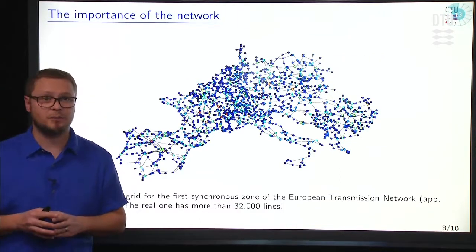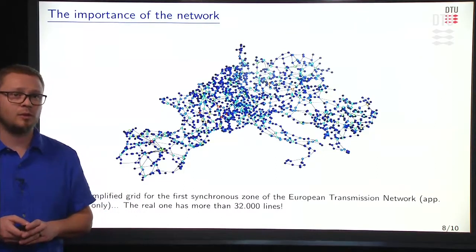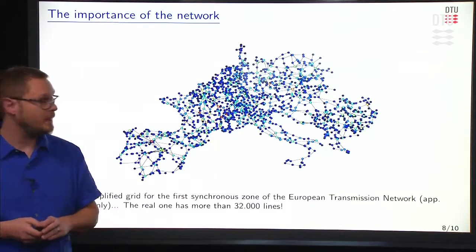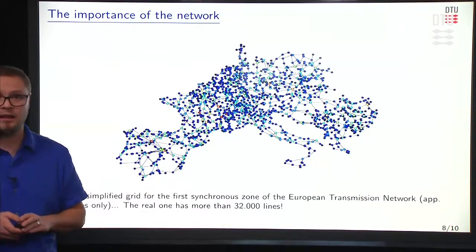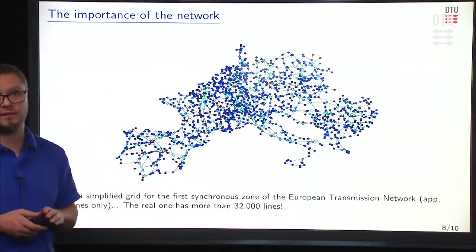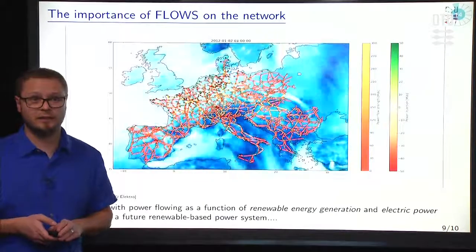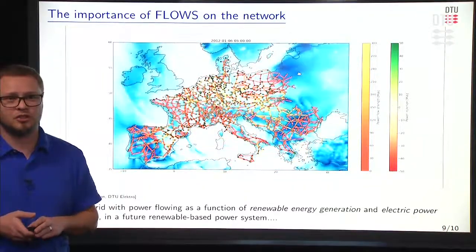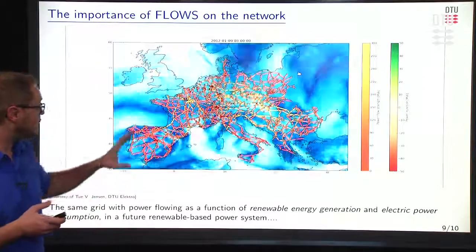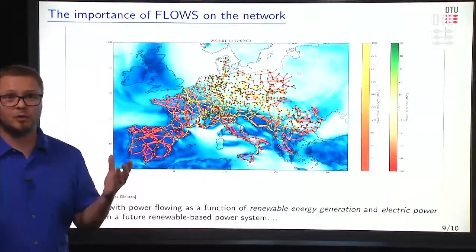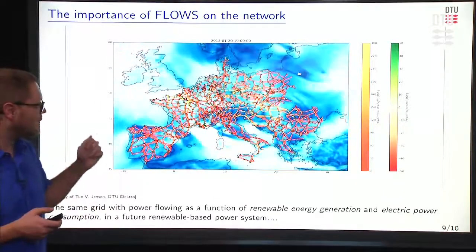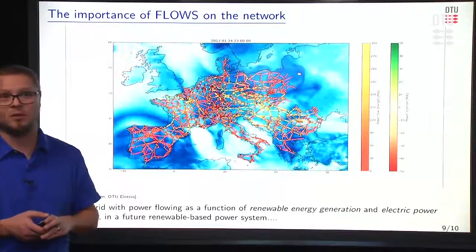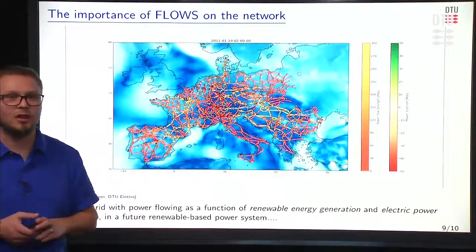When looking at this big project of a European-wide electricity market, we must remember that there is an underlying power network. This is a simplified representation of the European transmission network with 1,500 lines — but the real transmission-level power system has 30,000 lines, making it an extremely complicated system. On top of that, we have deployed renewable energy generation on this network. You can see an animation showing wind power potential across the network, with cable colors changing depending on the flows induced by wind power, load, and solar generation all over Europe.